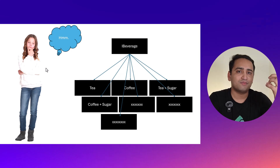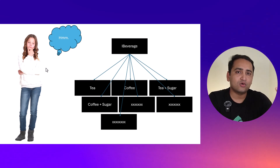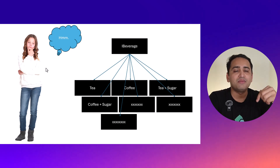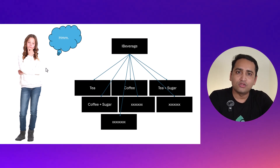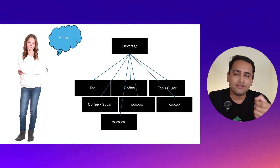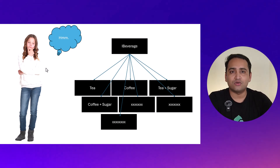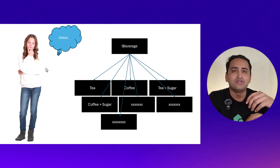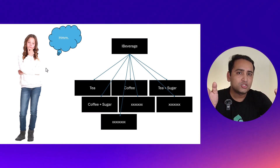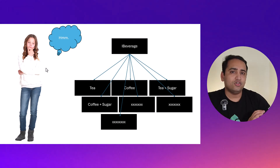Each specific item has its own cost. For example, plain tea costs one dollar. If I add milk, it costs 1.5 dollars, so the total would be 2.5 dollars. If I add sugar as well, the cost increases further. We have to handle all these possible cost combinations in this application.